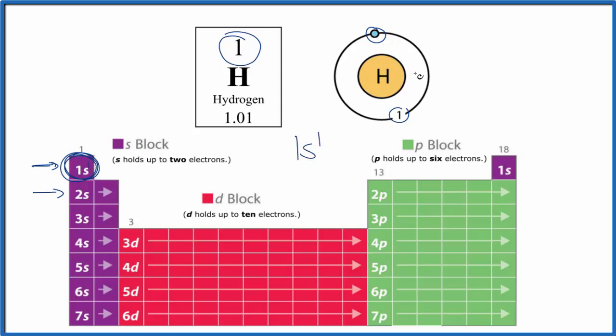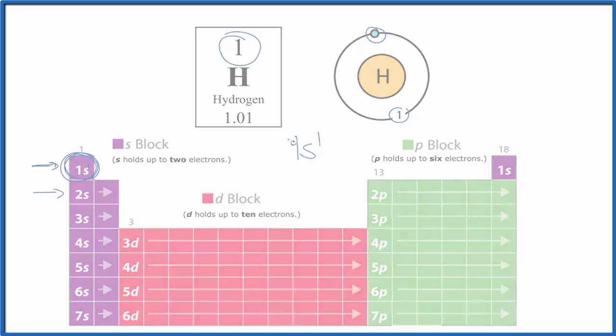1s1 is the electron configuration for hydrogen. If you need help with the neutrons, there's a link at the end of this video to help you do that. This is Dr. B with the Bohr model here, the Bohr diagram for the hydrogen atom. Thanks for watching.